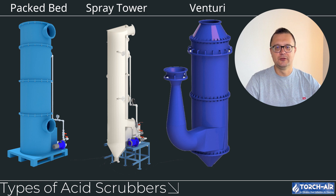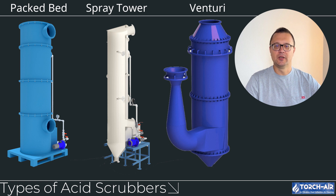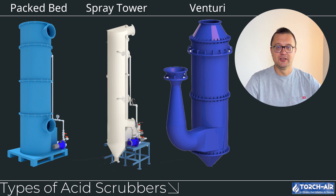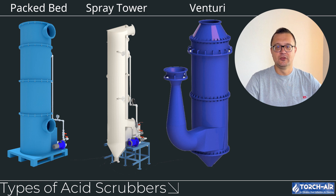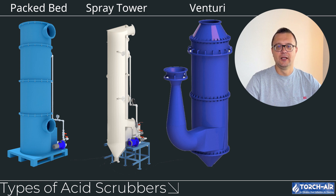Venturi acid scrubbers are designed to handle high-velocity gas streams and are particularly good at removing both acidic gases and particulates. The gas stream is forced through a venturi tube where it reaches high speeds, and then scrubbing liquid is injected. The turbulent mixing of gas and liquid leads to highly efficient acid gas removal. Advantages include excellent fine particulate and gas removal and high efficiency for difficult pollutants. Best for industrial processes with mixed pollutants, such as mining, cement production, or chemical plants.